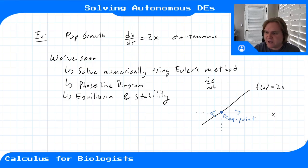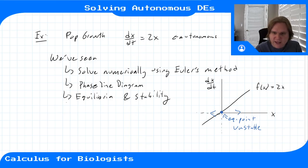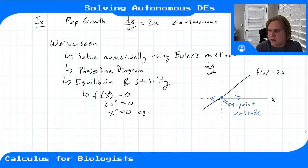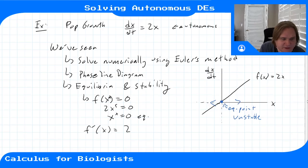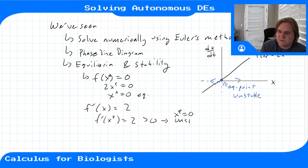The derivative here is positive to the right of zero, so we're moving away from it. On the left, it's negative, so we're moving away in that direction too. For population growth, we're only thinking about the positive quadrant, but if negative values were allowed, it would also grow away from the equilibrium in the negative direction. By checking f(x*) = 0, we get 2x* = 0, so x* = 0. The stability check gives f'(x) = 2, which is positive, so x* = 0 is unstable.